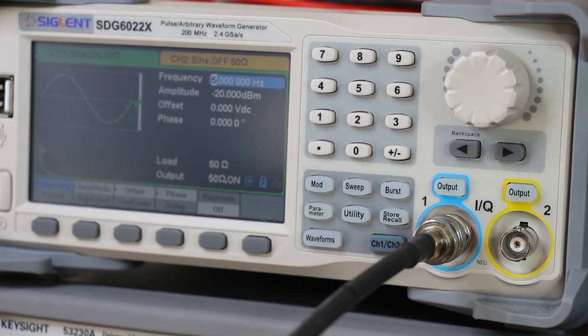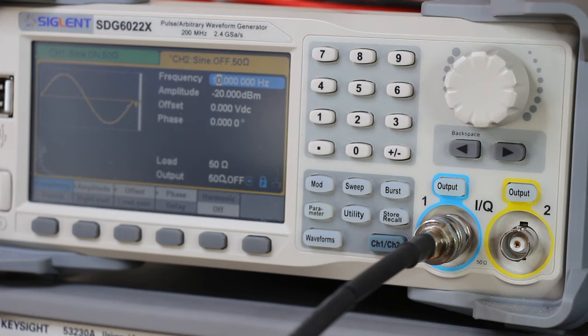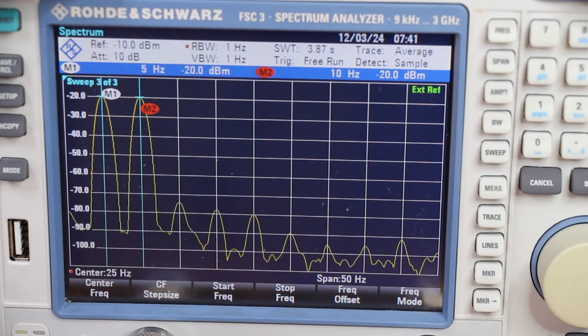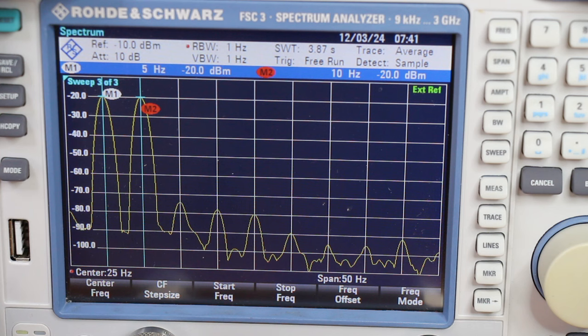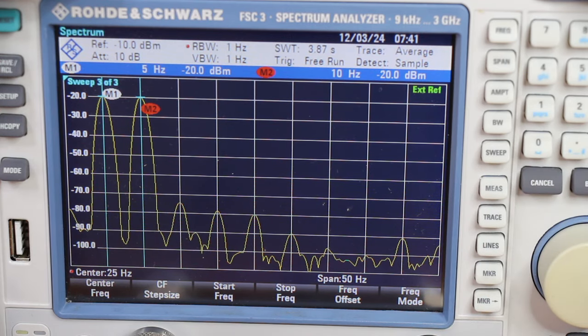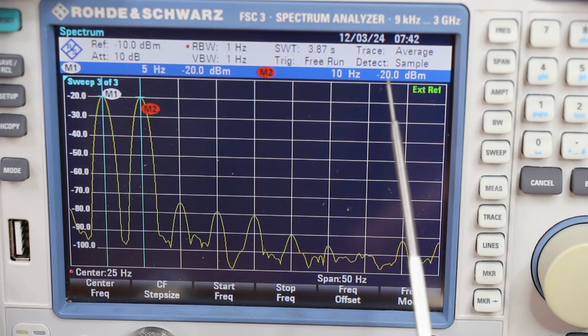And for this last test, let's set the first tone to 5 hertz, and the second tone to 10 hertz. And the level is still minus 20 dBm for both tones. And let's see what's happening on the spectrum analyzer. The resolution bandwidth RBW is still 1 hertz. And again, the display shows clearly the tones. 5 hertz minus 20 dBm, 10 hertz minus 20 dBm.